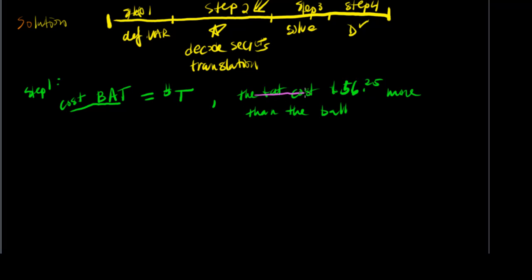$56 more than the ball. So we can deduce the ball is whatever the cost of the bat, subtract $56.25. Think about it, it makes sense. A baseball is less expensive than a bat. The bat costs this much, and then the ball is $56.25 less, whatever this cost is. So this is our first translation here.